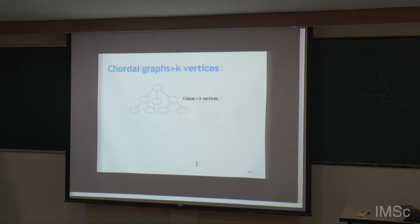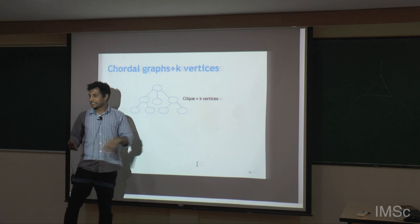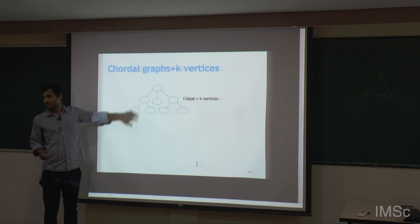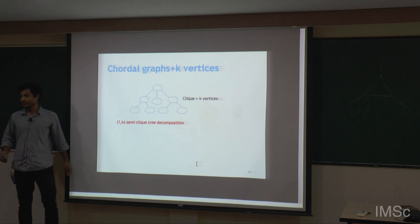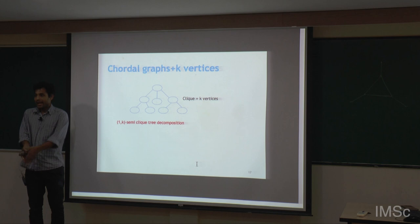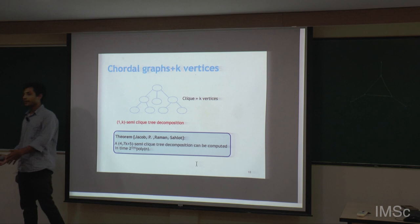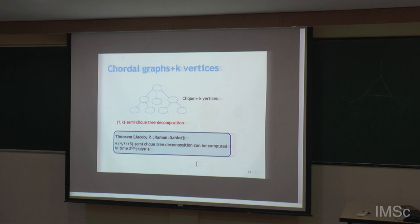So even though computing the chordal vertex deletion set takes more time, we can get a tree decomposition close to this. I call it a (1, k) semi-clique tree decomposition, meaning every bag can be partitioned into one clique and k vertices. Instead of a (1, k) semi-clique tree decomposition, what we actually prove is we can get a (4, 7k+5) semi-clique tree decomposition, where every bag is partitioned into 4 cliques and 7k+5 vertices.